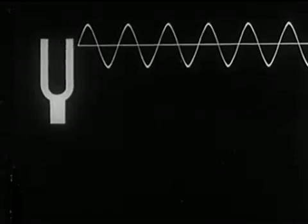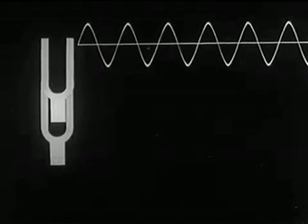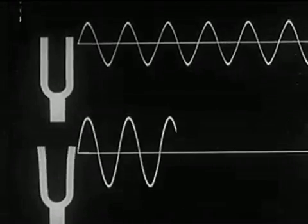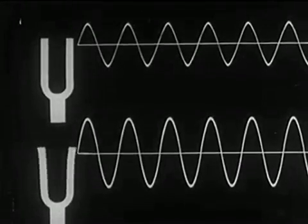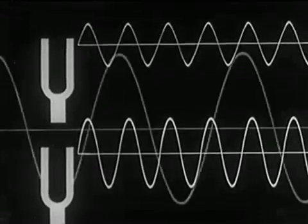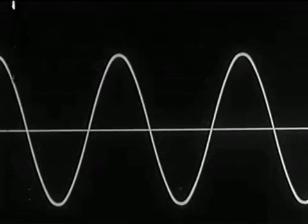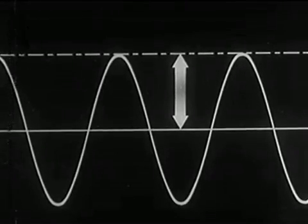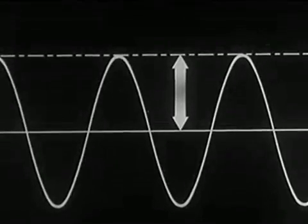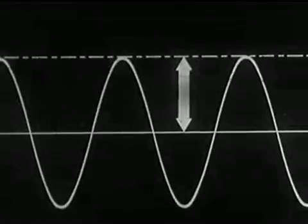Every sound sets up a disturbance in the transmitting medium. The larger the disturbance or displacement of the individual particles, the greater is the height of its graph above the neutral line. This displacement above the neutral line is called amplitude, and it is amplitude that determines loudness. As the amplitude increases, loudness increases.